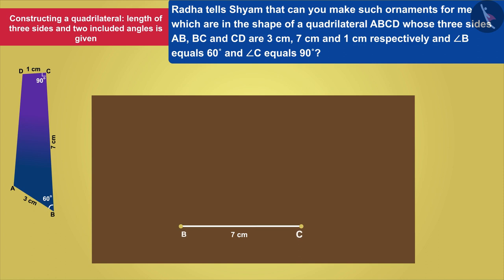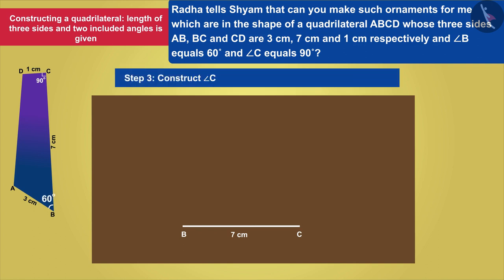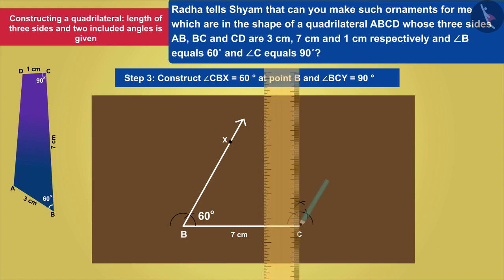The measurement of both angles formed at both points on BC is 60 degrees and 90 degrees. With the help of a compass, he constructs angle CBX equals 60 degrees at point B and angle BCY equals 90 degrees at point C.